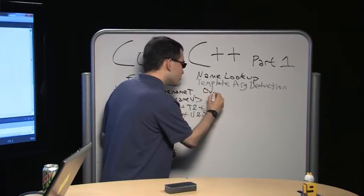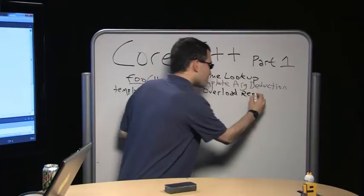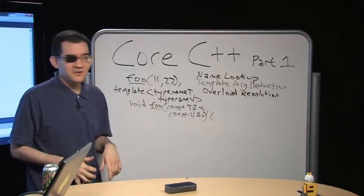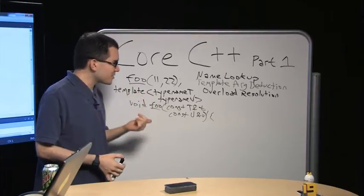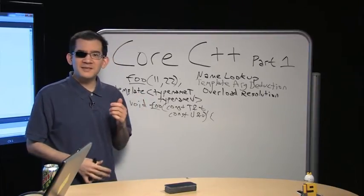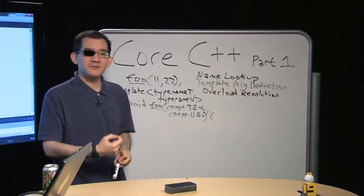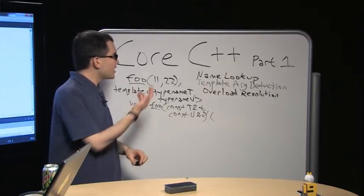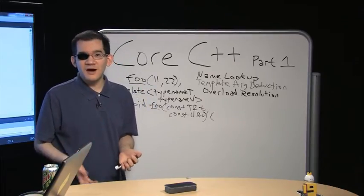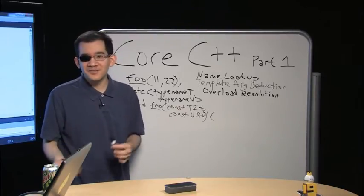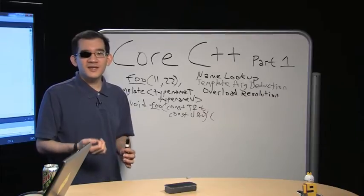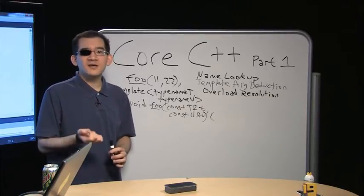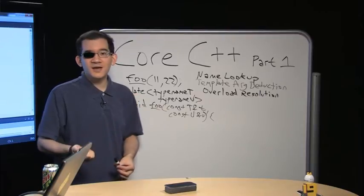Then the compiler does overload resolution. It says, okay, you've got a free function foo in the global namespace, you've got some function templates that have generated exact signatures — which one is the best? Overload resolution has a bunch of subtle rules intended to produce a desirable result. If I've got foo taking int and int and another foo taking const string ref and const string ref, and my arguments are 11 and 22, I obviously want the foo taking a couple of ints.